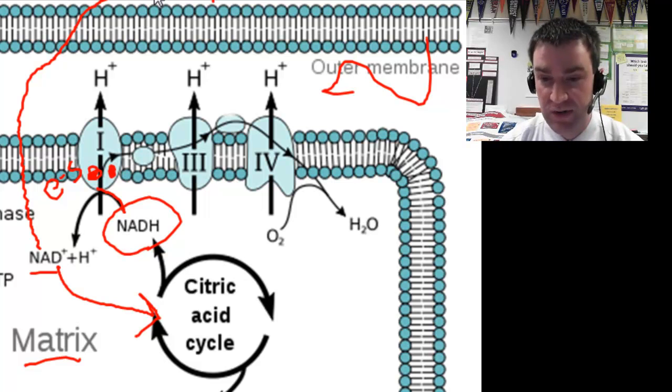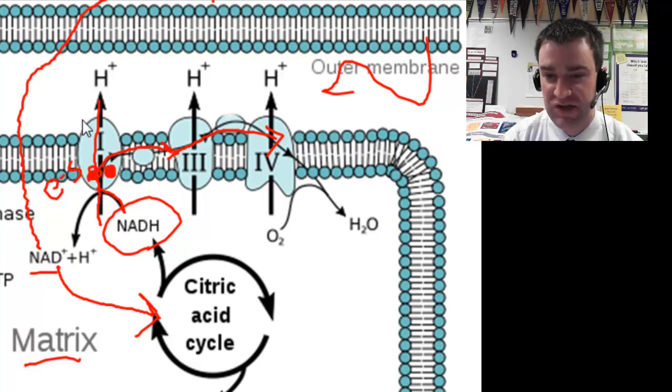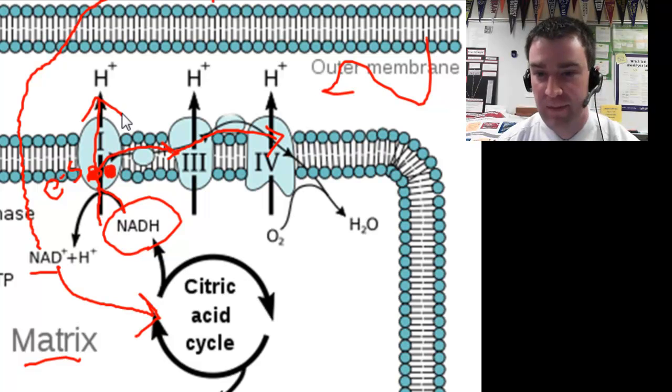So what do the electrons do once they're in the chain? They're going to travel from complex to complex and power each complex enabling it to do the active transport of H+ to one side of the membrane. So they're not pumping electrons, they're pumping H+ ions and the electrons are simply powering that active transport.